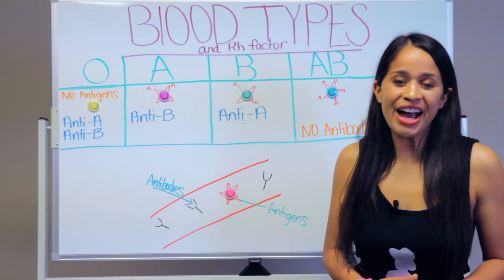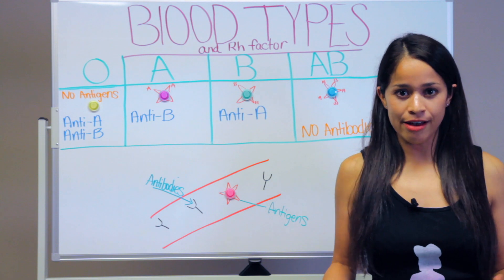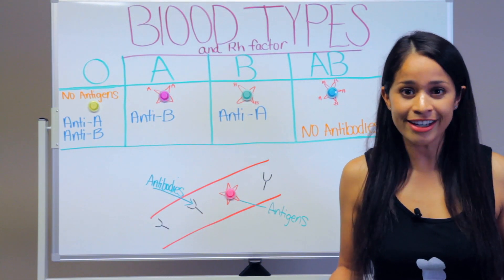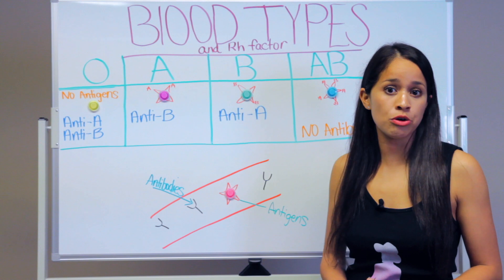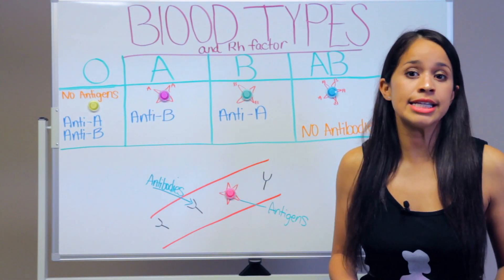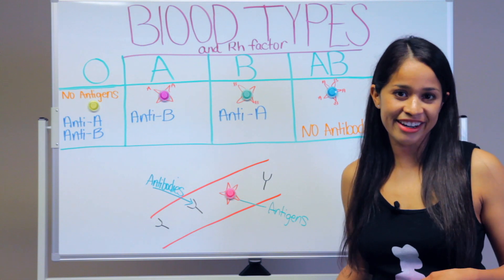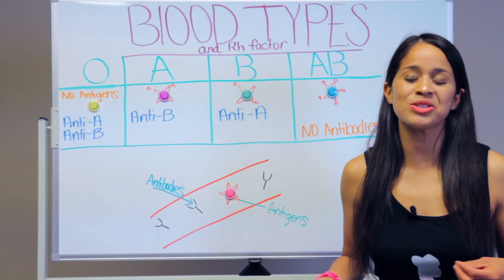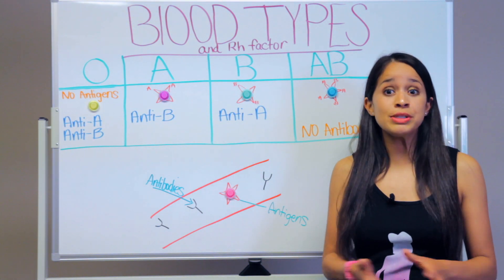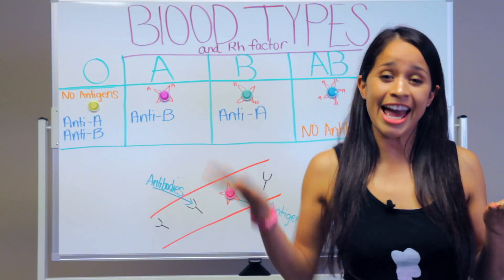The RH factor is a protein that can be found on the surface of red blood cells. If your blood has this protein present, you are RH positive. If it does not have it present, you are RH negative. During pregnancy is when it can technically be a problem if you're RH negative and your baby is RH positive. To understand blood types, you need to understand the difference between antigen versus antibody.